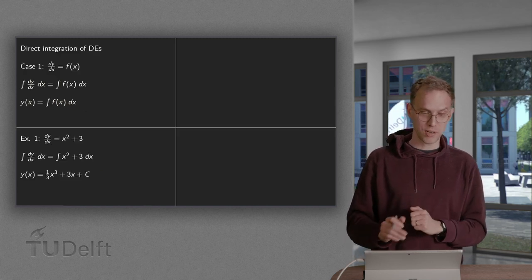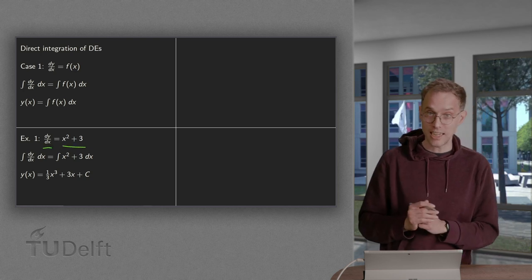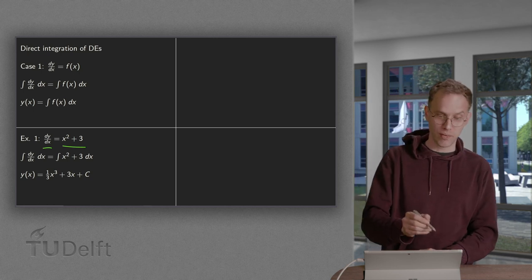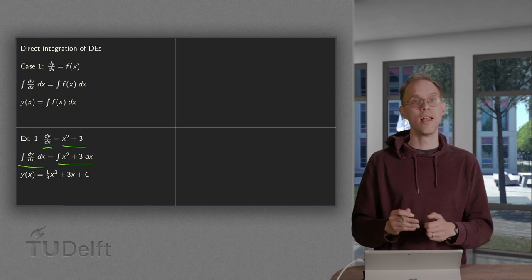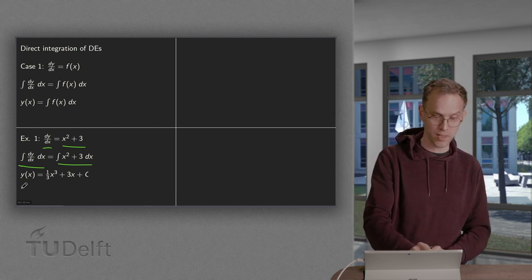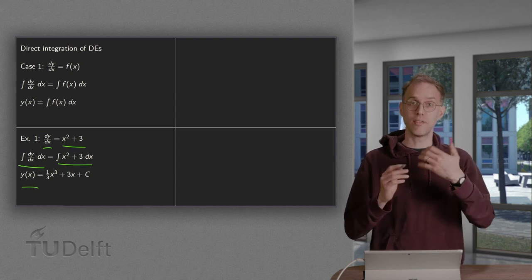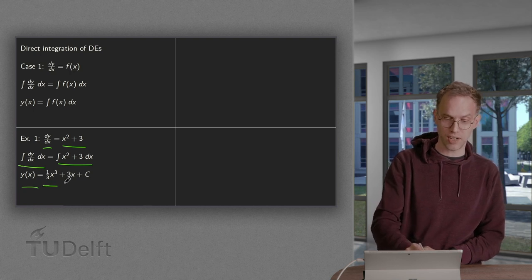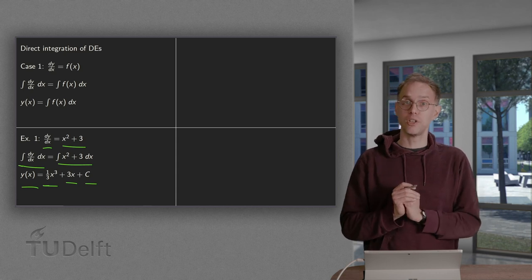So let us look at an explicit example. dy/dx equals a function of x only on the right-hand side — no y's on the right-hand side. We integrate with respect to x on both sides. On the left-hand side we get y(x), and on the right-hand side the antiderivative of x² + 3 equals one-third x³ + 3x plus an integration constant. And there we have our solution y(x).